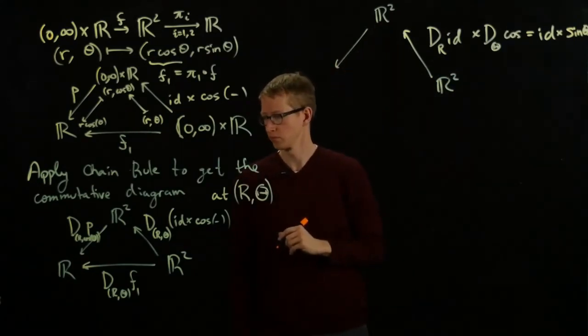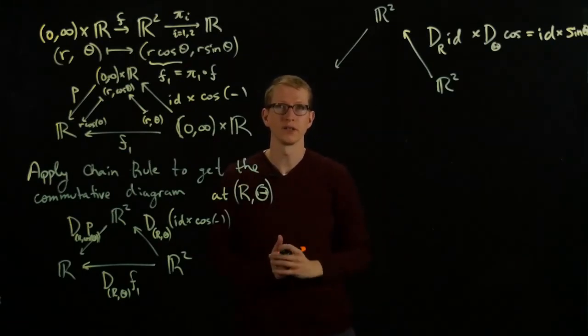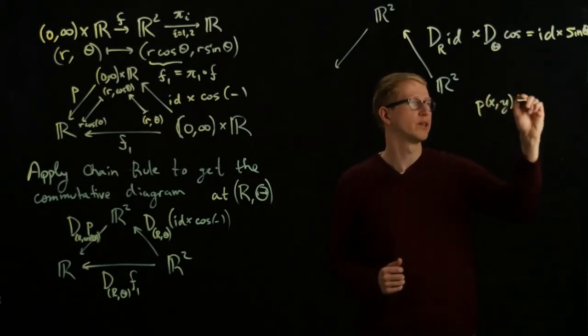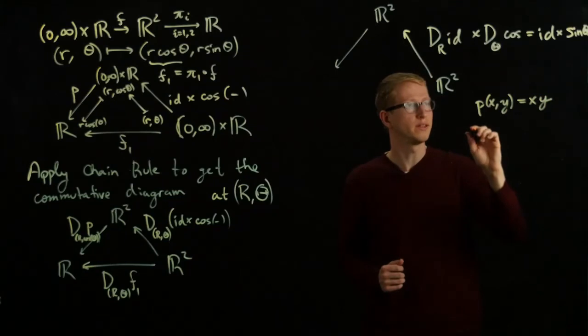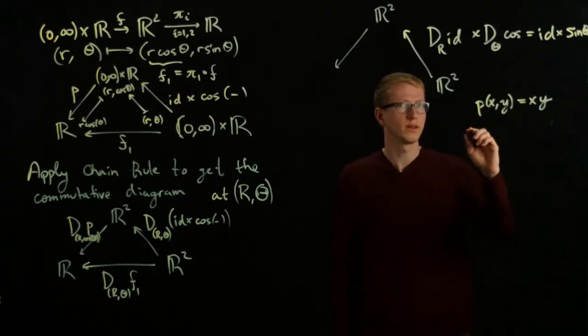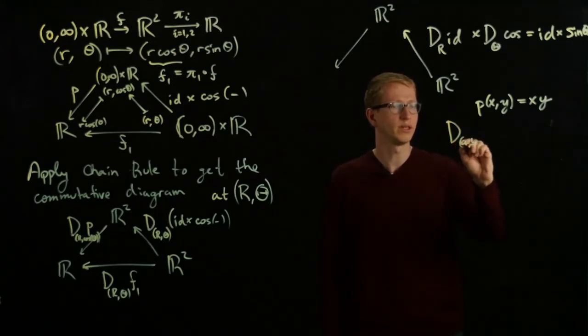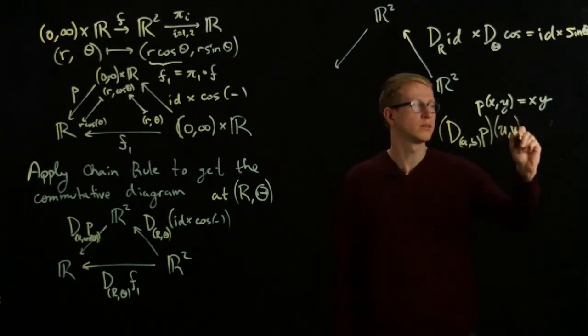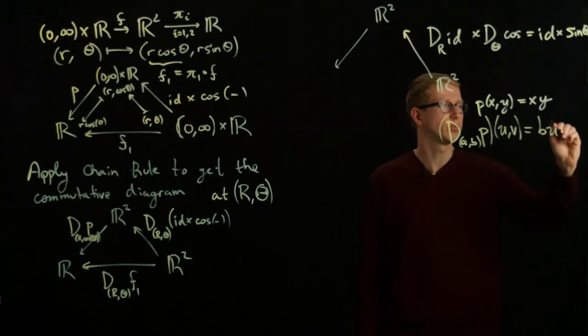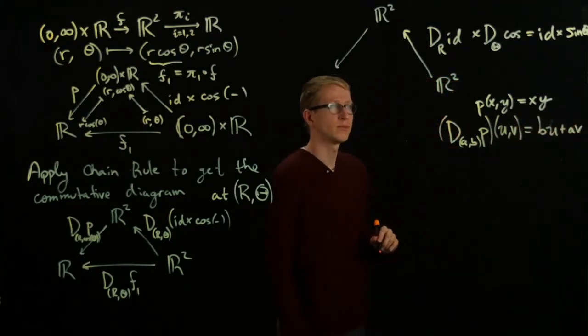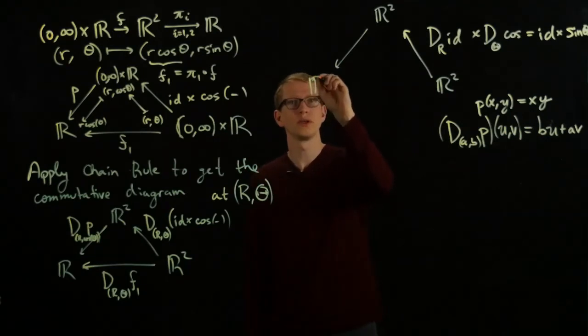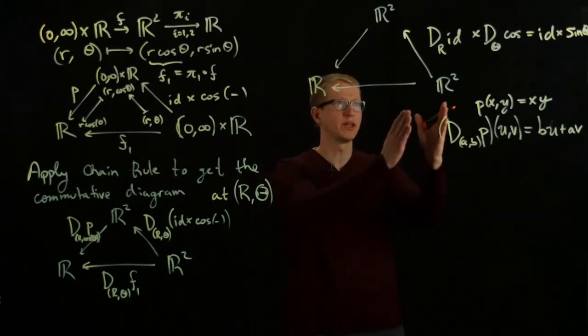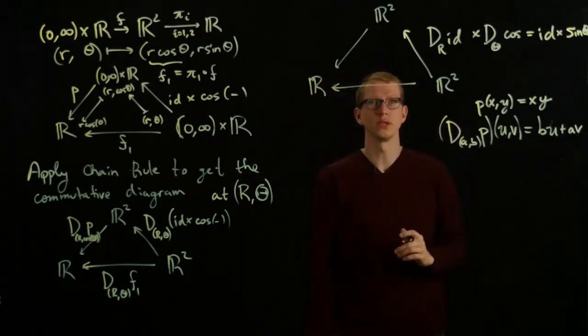Now, let's focus on the next term, the derivative of the product function. Recall, if P is a function of two variables, the product of X and Y, then this is a function from R² to R. The derivative of this function at the point (A,B) applied to the vector (U,V) is given by BU + AV. Using this, we can calculate what the image of two vectors goes to here.